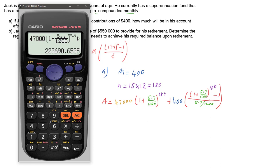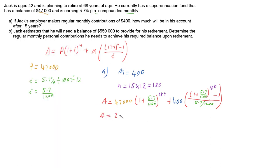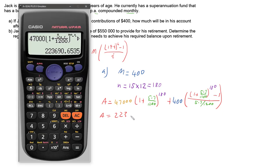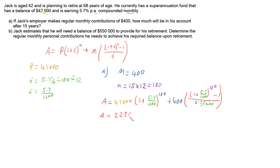So that means that after 15 years, Jack's going to have $223,690.65. So he's got $223,690.65.